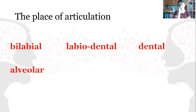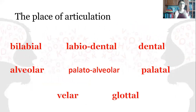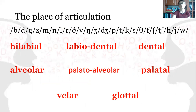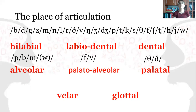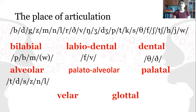Now let's look at examples. The bilabial sounds are P, B, and M — pay attention, both lips are involved. The labiodental sounds involve the lower lip with the upper teeth. For dental sounds, the tip of the tongue touches the upper teeth or is placed between the teeth. For alveolar sounds — T, D, S, Z, N, L — the blade of the tongue touches the alveolar region. These are quite problematic sounds for some learners.